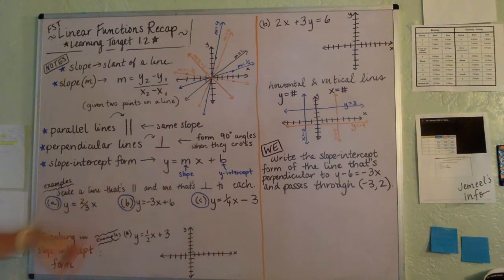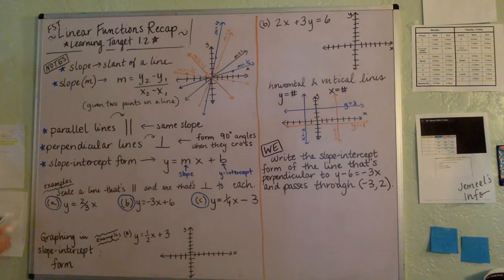Let's just do a couple of examples just to remind ourselves. So given Y equals 2-thirds X, if you were asked to state a line that's parallel to it, you could say, for example, there are many possibilities here.